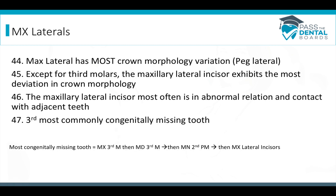The maxillary lateral is the third most commonly congenitally missing tooth. The most common is the third molar — specifically the maxillary third molar, then the mandibular third molar. Second most common is the mandibular second premolar, and third is the maxillary lateral incisor.